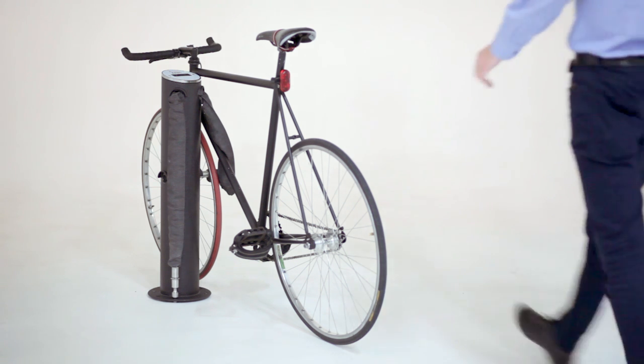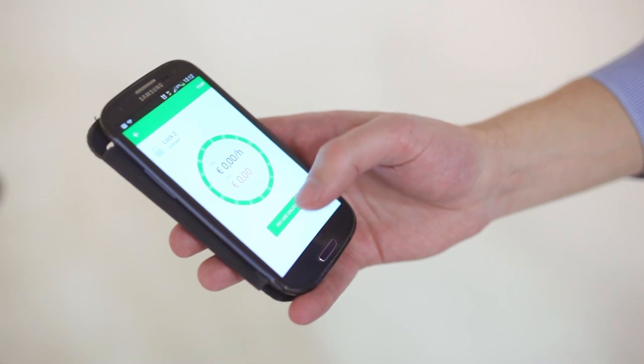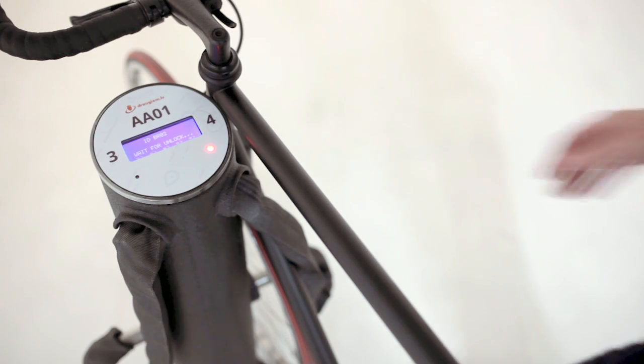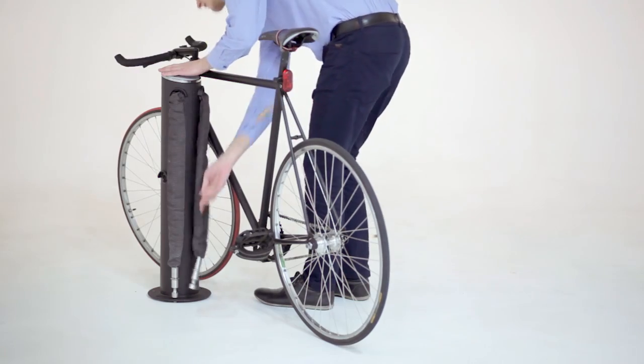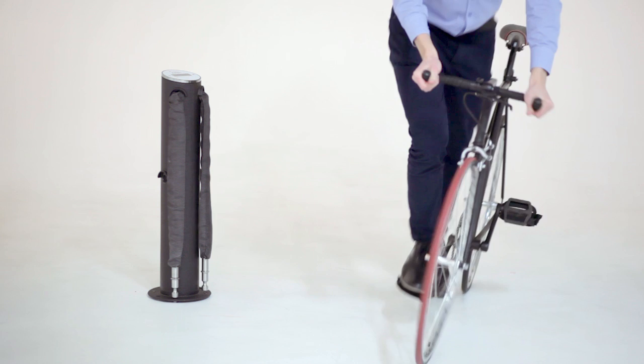When you return, simply approach the Bindio dock, grab your app again and press pay and unlock. The dock unlocks, remove the chain and you're on your way. Ride safe.